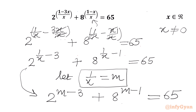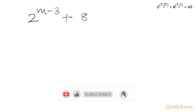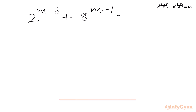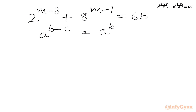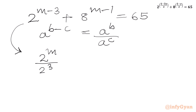Now we know the exponent law: a raised to the power (b minus c) can be written as a raised to b over a raised to c. Let us apply this. So we will get the equation: 2 raised to m over 2 raised to 3, plus 8 raised to m over 8 raised to 1, equal to 65.